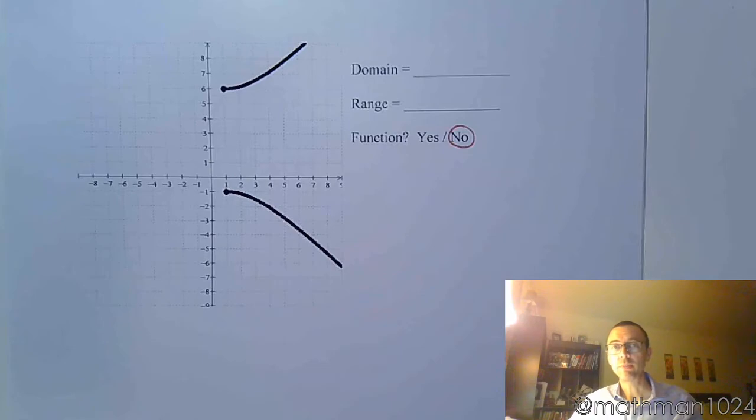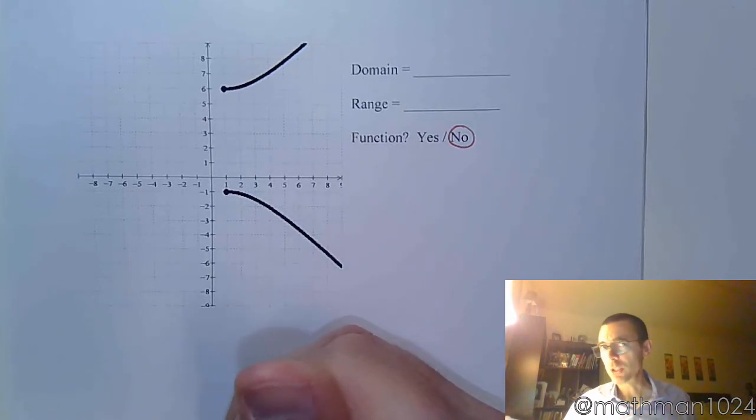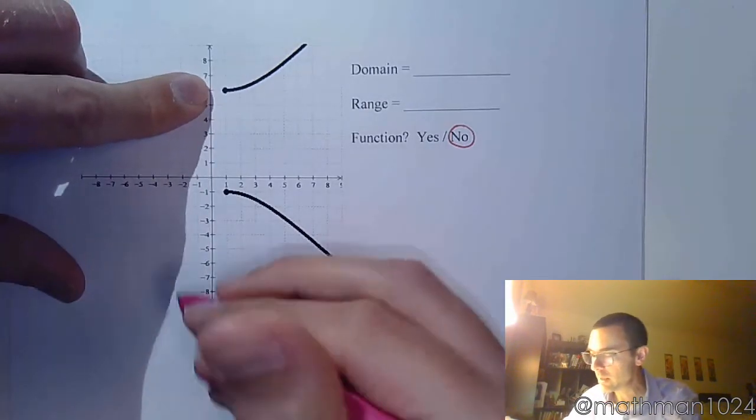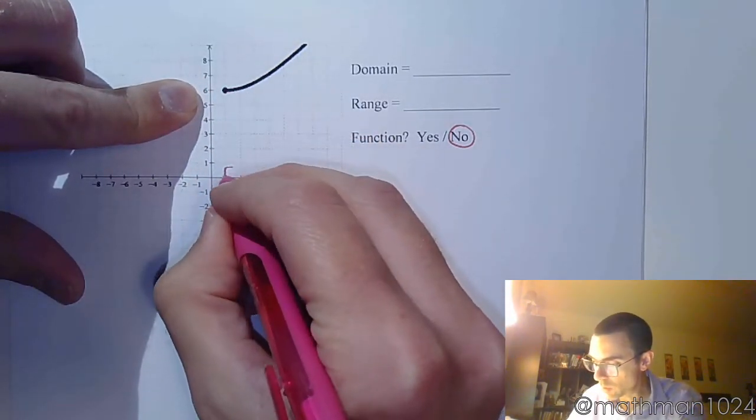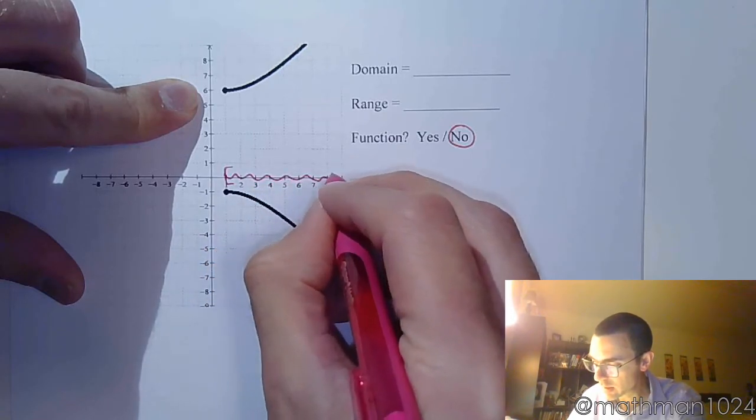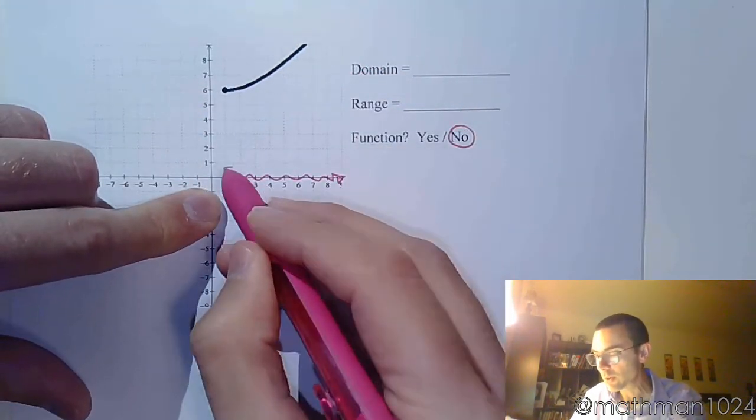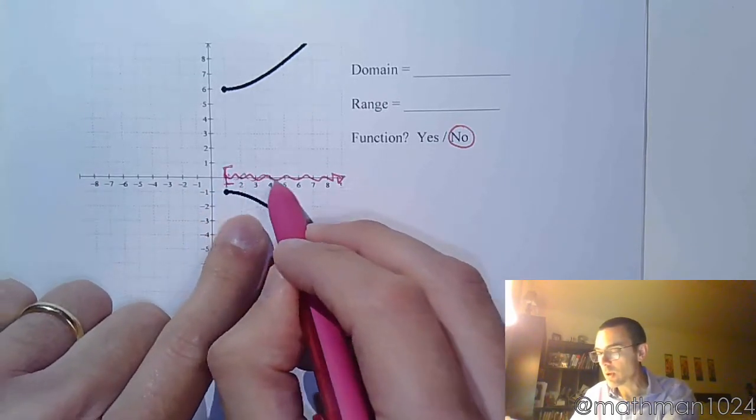What about your domain? Well, this guy is broken up into two pieces. But you're just going to do the union of whatever you have. My domain for this guy right here is from 1 to infinity as he goes out there. But this one right here also starts at 1. And he also goes all the way out to the right.